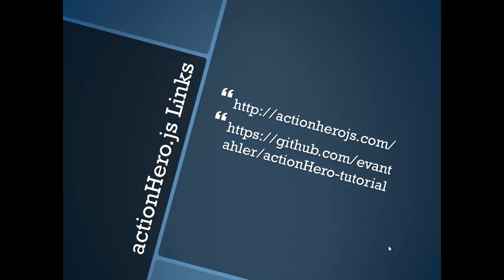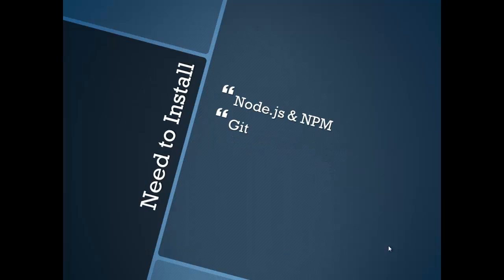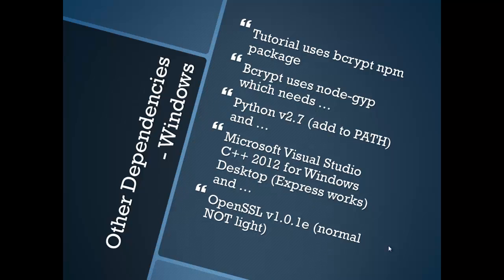You can find Action Hero at actionherojs.com and also the Action Hero tutorial on GitHub. On your box you'll need Node.js and npm, also git. There are other dependencies that don't come specifically with Windows that you'll need to install, because the tutorial needs the bcrypt npm package, and bcrypt uses node-gyp which needs Python to run.